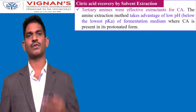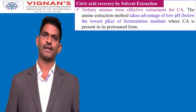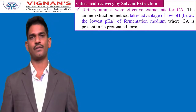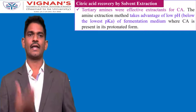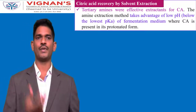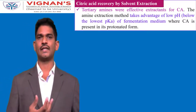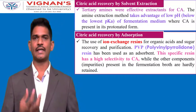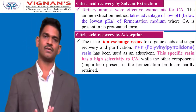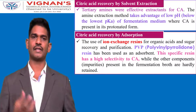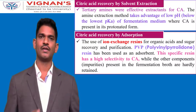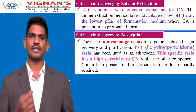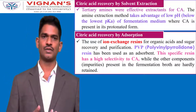Citric acid recovery can also be done by solvent extraction, where tertiary amines are used as effective extractants, taking advantage of the low pH of the fermentation medium where citric acid is present in its protonated form. Another method is recovery by adsorption, using ionic exchange resins for selective extraction. PVP resin (polyvinyl pyrrolidone) has high selectivity towards citric acid and can recover more than 90% of citric acid from the fermentation broth.